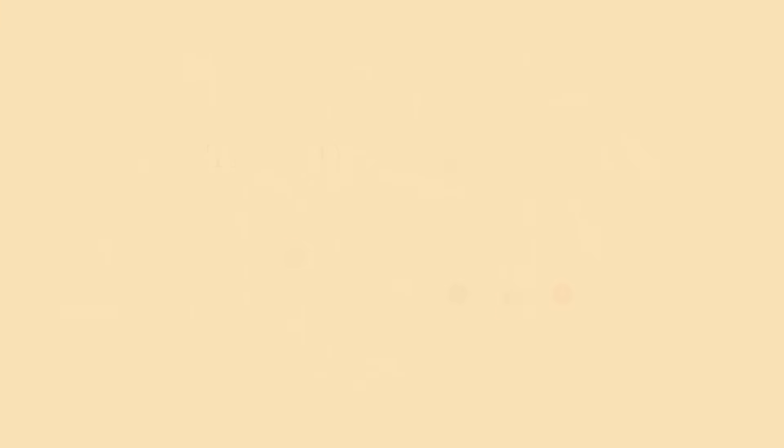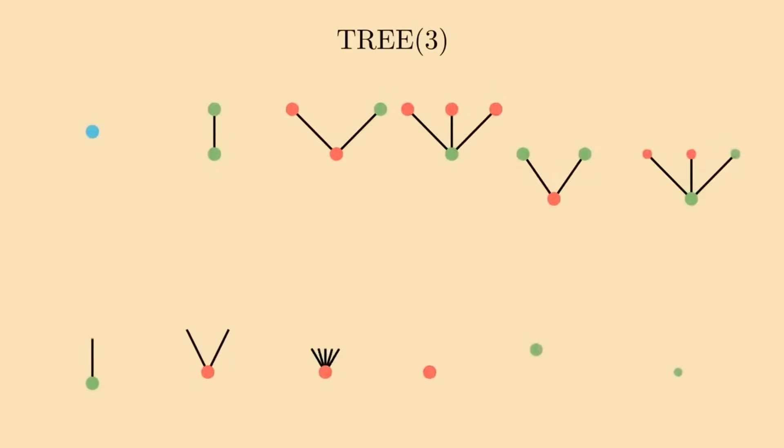But then you come to Tree 3. Tree 3 uses three colors, and Tree 3 is different. Whereas the previous forests died disappointingly quickly, a forest of three colored seeds grows for an extraordinarily long time.